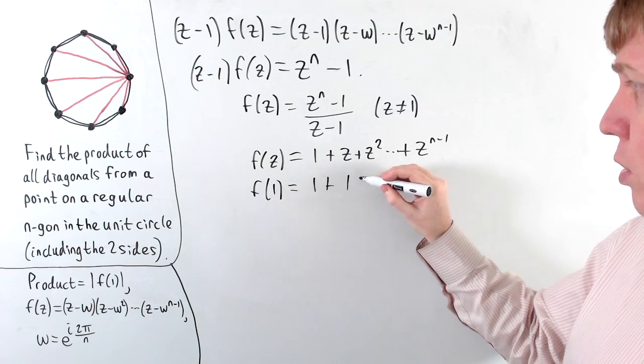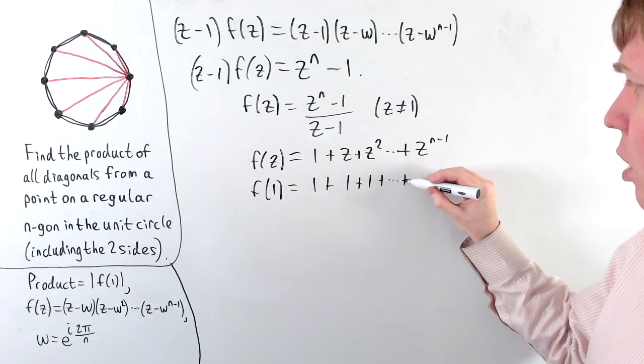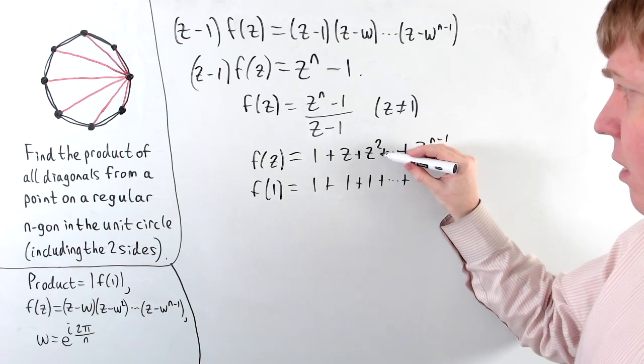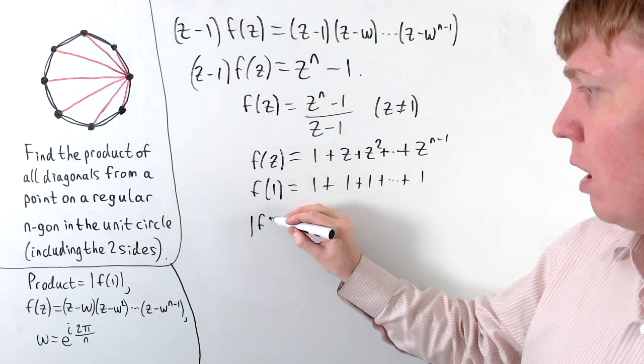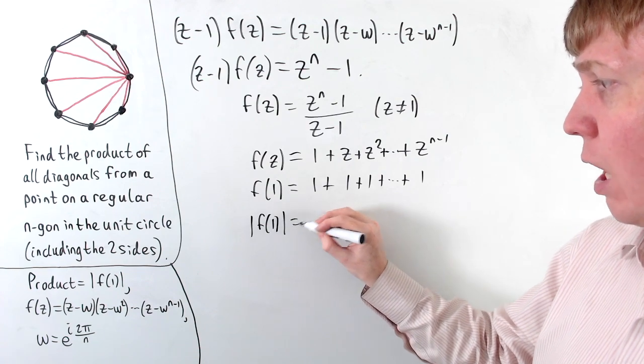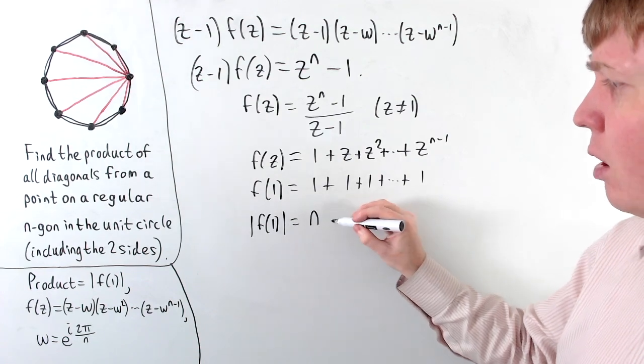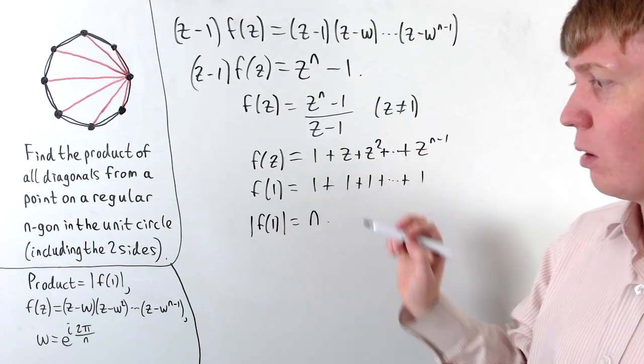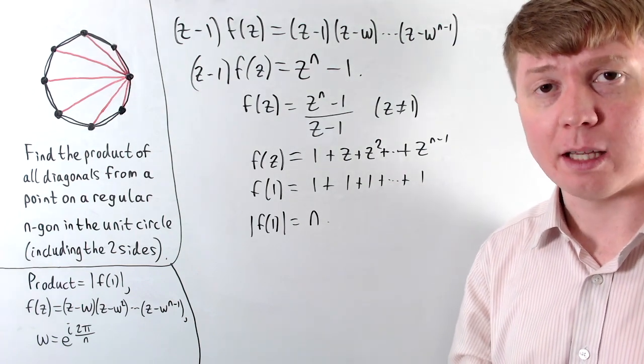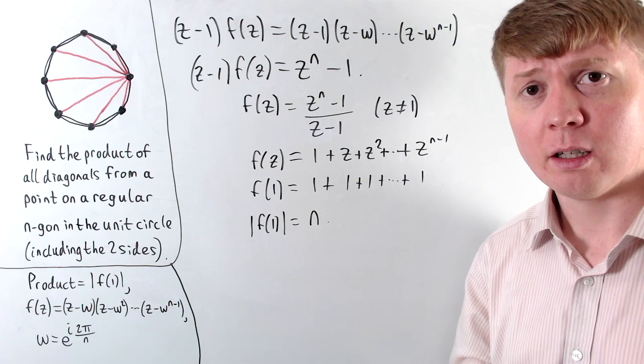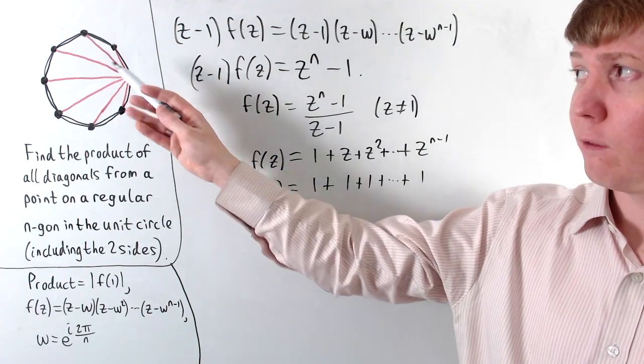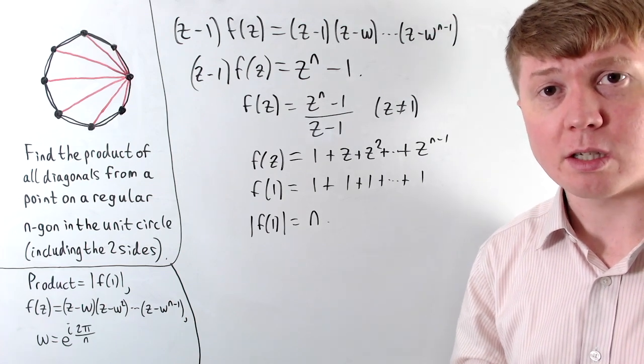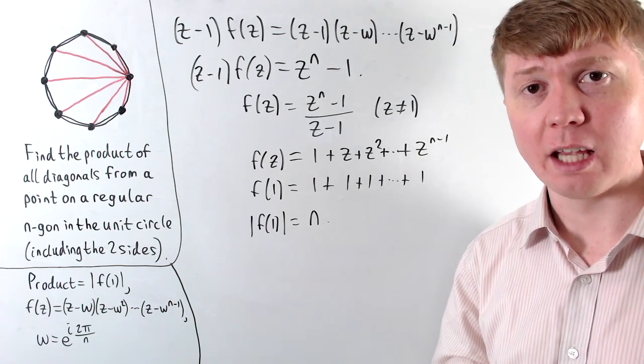So then we just have 1 plus 1 plus 1 and so on, all the way up to plus 1 again. So here we're just adding 1 to itself, we're doing this n times. So we don't actually need to take the modulus here, but the modulus of f of 1 then would just be equal to n, because we're adding 1 to itself n times. So this tells us then that the product of all of these diagonals coming out from this point, on our regular n-sided polygon inscribed in the unit circle, is just n in the end.